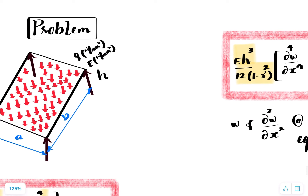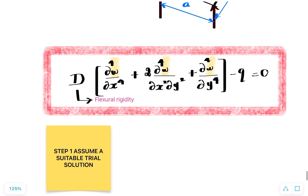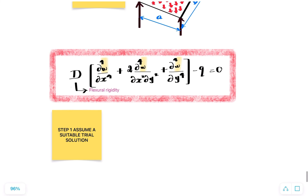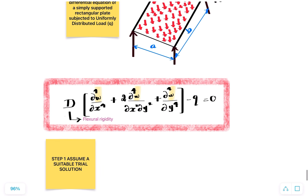We are going to solve this problem by Galerkin's weighted residual method. The flexural rigidity is given by the notation D, where D = Eh³/(12(1−ν²)). So the governing differential equation becomes D × [∂⁴w/∂x⁴ + 2∂⁴w/∂x²∂y² + ∂⁴w/∂y⁴] − q = 0. The first step is to assume a trial solution.